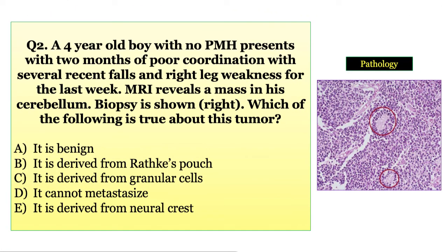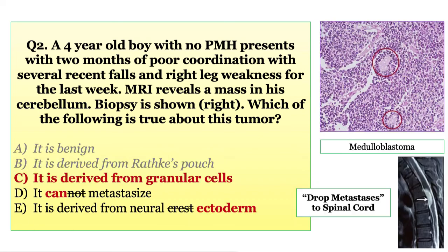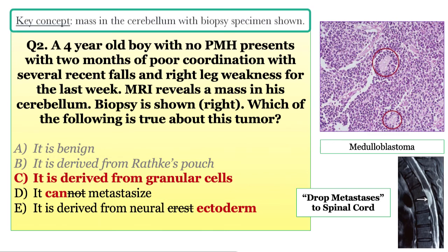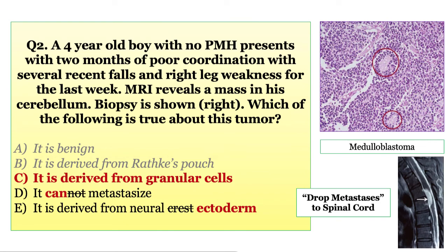Question 2: A 4-year-old boy presents with 2 months of poor coordination, several recent falls, and right leg weakness for the last week. MRI reveals a mass in his cerebellum. Biopsy is shown. Which of the following is true about this tumor — it is benign, derived from Rathke's pouch, derived from granular cells, cannot metastasize, or derived from the neural crest? The answer is C. This is a medulloblastoma derived from granular cells of the cerebellum, which are derived from neural ectoderm. Medulloblastomas can definitely metastasize — the right leg weakness here is from a drop metastasis to the spinal cord. Rathke's pouch describes craniopharyngiomas.